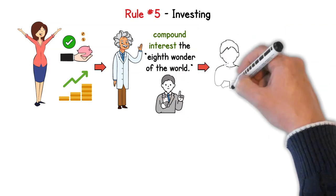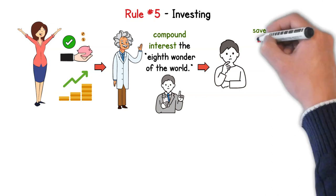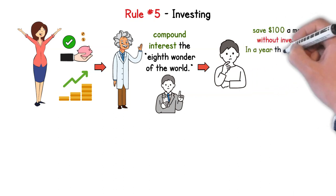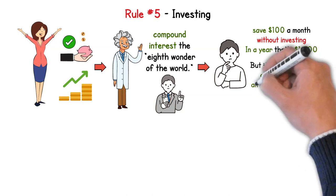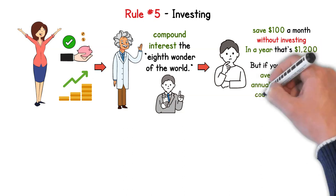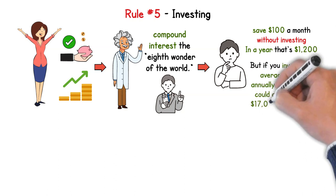Einstein once dubbed compound interest the eighth wonder of the world. And man, he wasn't kidding. Imagine you save $100 every month without investing. In a year, that's $1,200. But what if you invest it and gain an average of 7% annually? In 10 years, with the magic of compounding, that amount could grow to over $17,000.